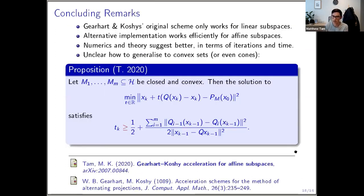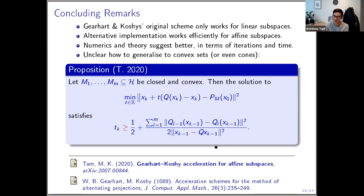To conclude: Gearhart and Koshy's implementation only worked for linear subspaces, but this alternative step size rule works efficiently for affine subspaces. The numerics and theory suggest improvement in both iterations and time. What remains unclear is how to extend this scheme beyond affine subspaces to convex sets or convex cones — for convex sets you can derive a bound on the step size rather than an equality, but it's not clear whether the acceleration idea is even possible in the general convex case.